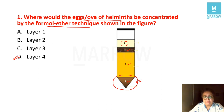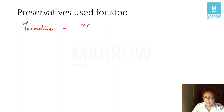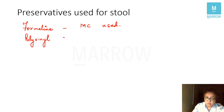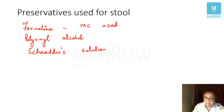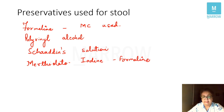Let's quickly cover important points about stool processing. The preservatives commonly used for stool are formalin — the most commonly used — then polyvinyl alcohol, Schaudinn's solution, and lastly MIF: merthiolate-iodine-formalin solution. These are the four preservatives used to maintain the morphology of the organisms.